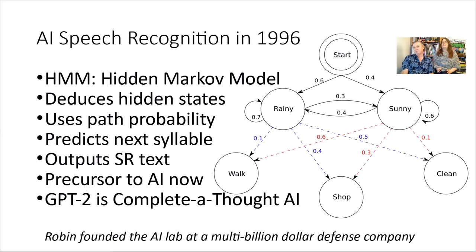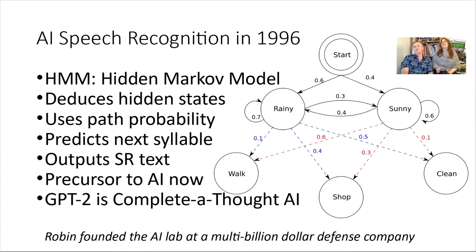It's a little bit easier to understand, so I'm going to quickly go through this — actually, Gabrielle will. First, it deduces hidden states and uses path probabilities. The hidden states in this case are rainy and sunny. We know whether people are walking, shopping, or cleaning, but we don't know what the weather is, and we're trying to deduce that using HMMs. Then they predict the next syllable — so it can predict each syllable and then each word of what is being said — and it outputs speech recognition text. It's a precursor to the current AI we have now.